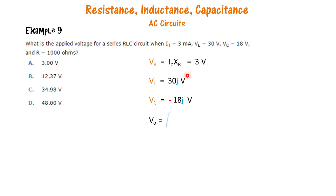So we first find the voltage across the resistance and we then find the net voltage by adding the two vectors VR and VL minus VC.